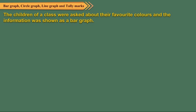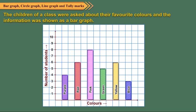The children of a class were asked about their favorite colors and the information was shown as a bar graph. The bar for the pink color is tallest. It means pink color is liked by most of the students. Also the bar for blue color is shortest. So blue color is liked by least number of students. The bars for red and yellow colors are of equal height. So these two colors are liked by equal number of students.